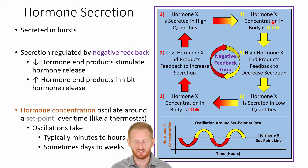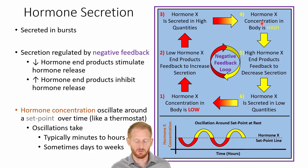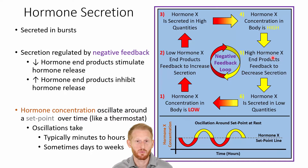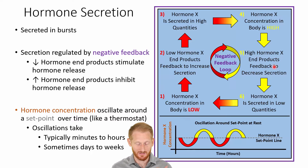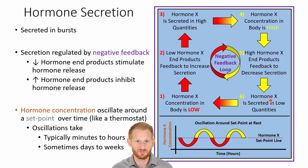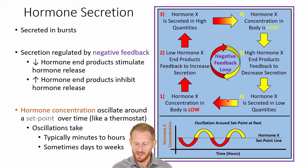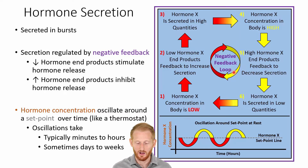When more glucagon is released, that increases the concentration of glucagon in the blood, which leads to an increase in the end product — more blood glucose. Having more blood glucose then feeds back negatively to decrease how much glucagon is released by the pancreas. Eventually the glucagon gets used up, we end up with a low concentration of glucagon again, and the cycle continues.